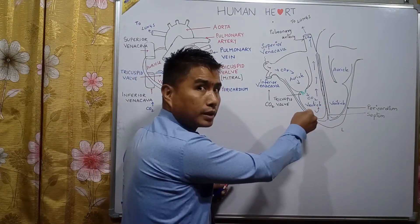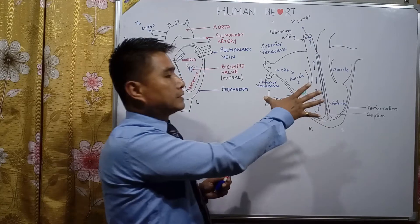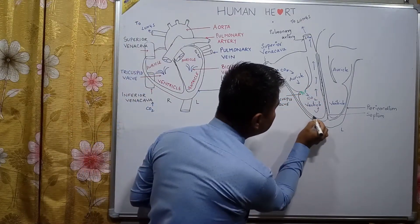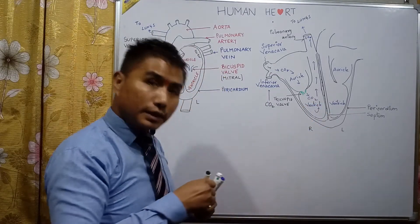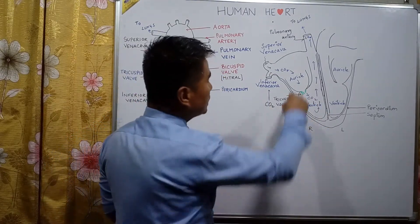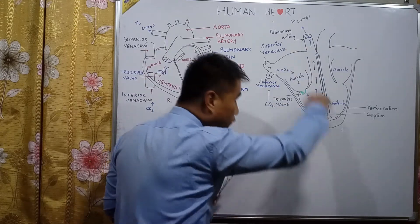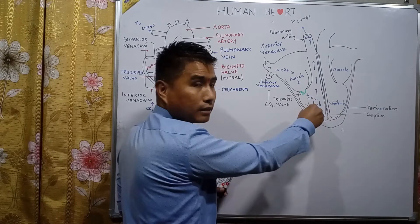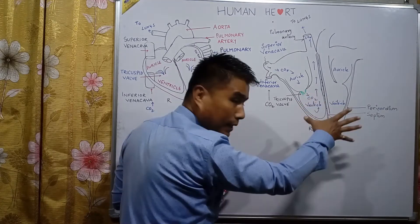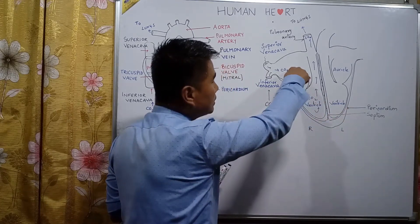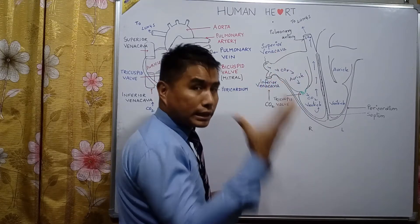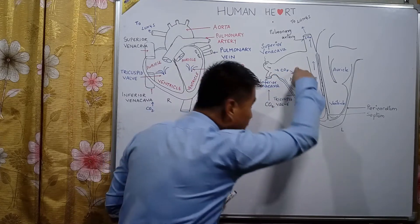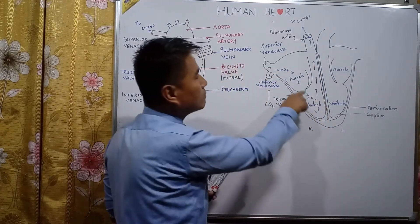Now the ventricle has contracted; next the ventricle expands again. When the ventricle expands, a suction force is created and the blood from the auricle rushes down to the ventricle. The valve was closed when the ventricle contracted, but now as the ventricle expands, carbon dioxide-containing blood again rushes from the auricle to the ventricle and the tricuspid valve opens.